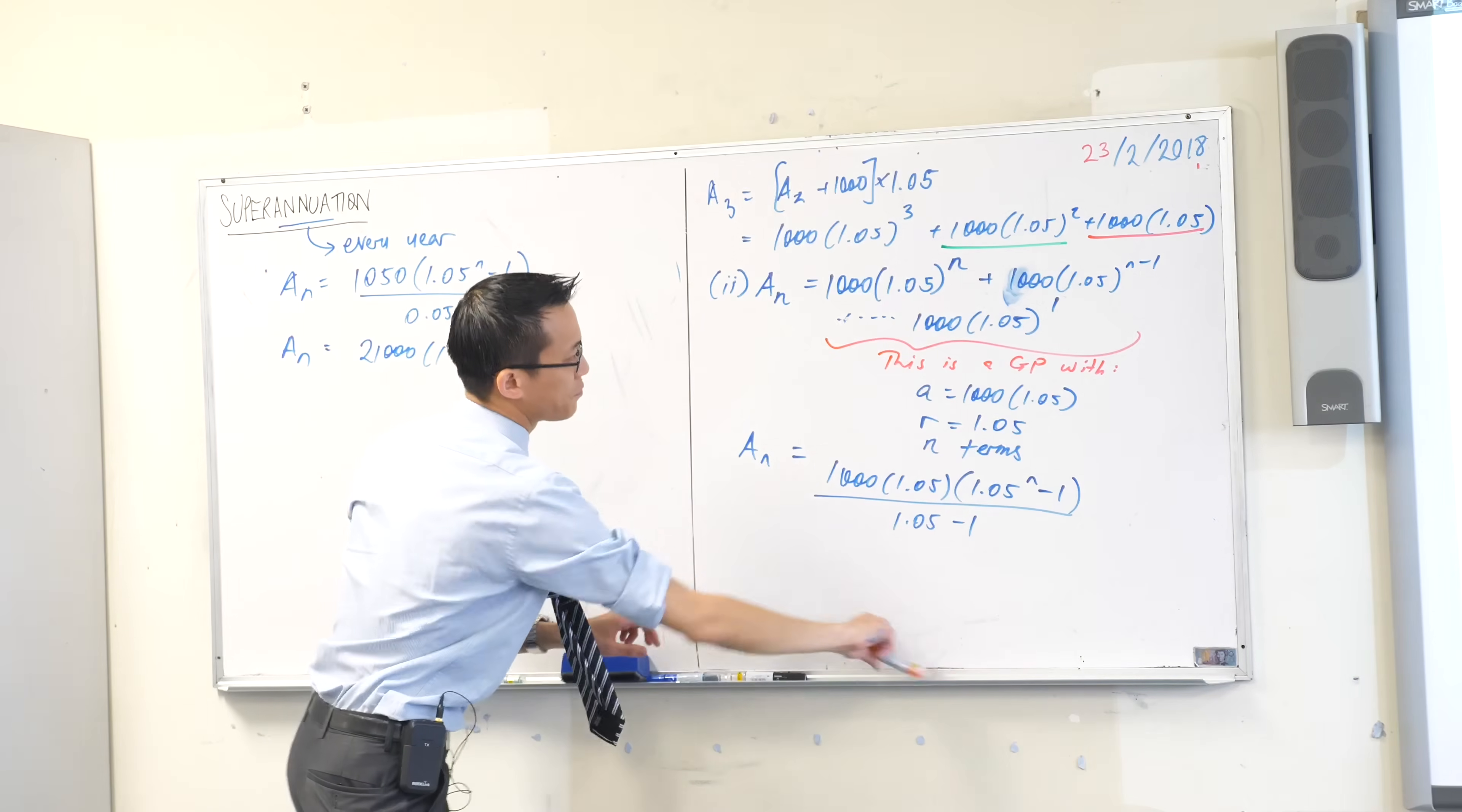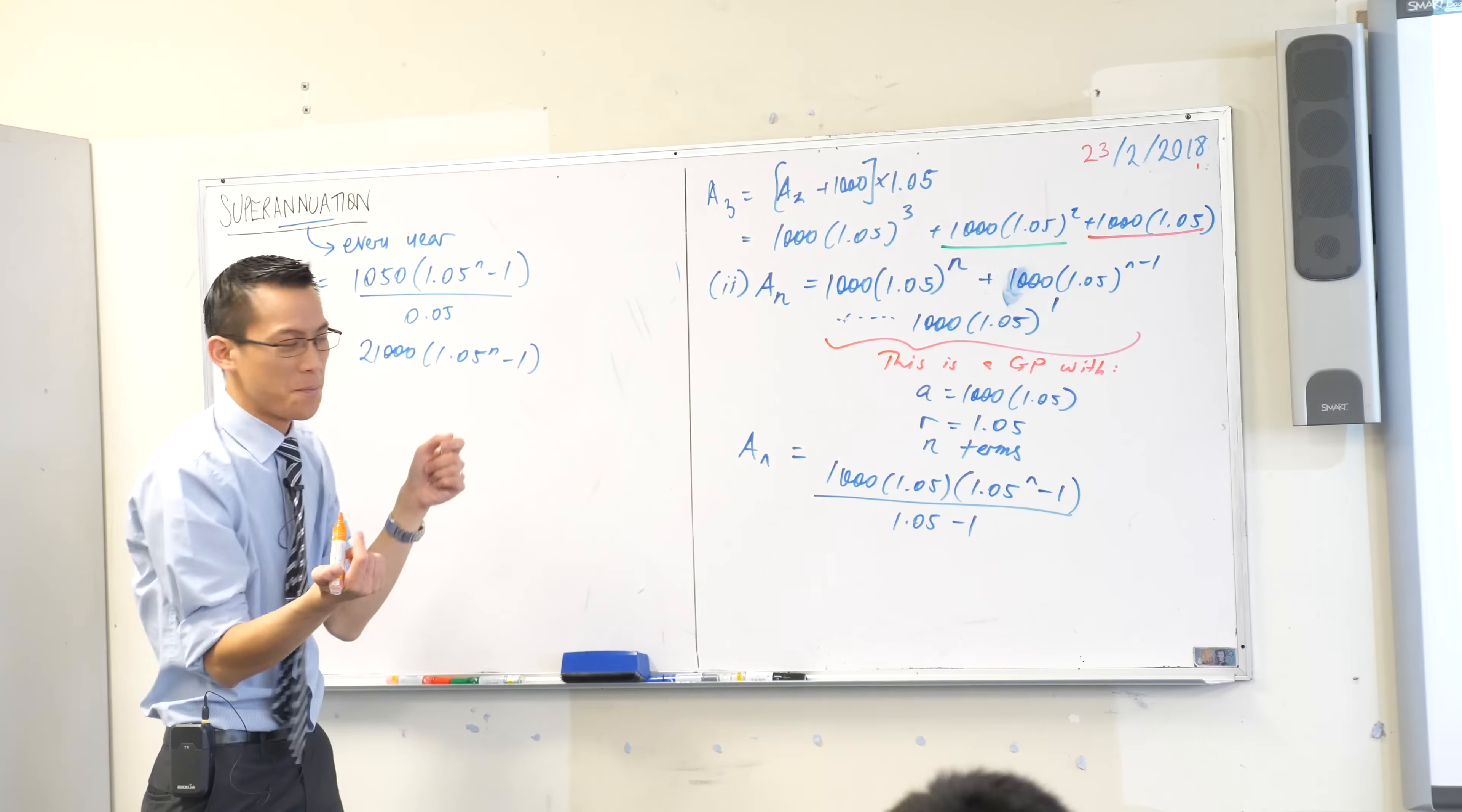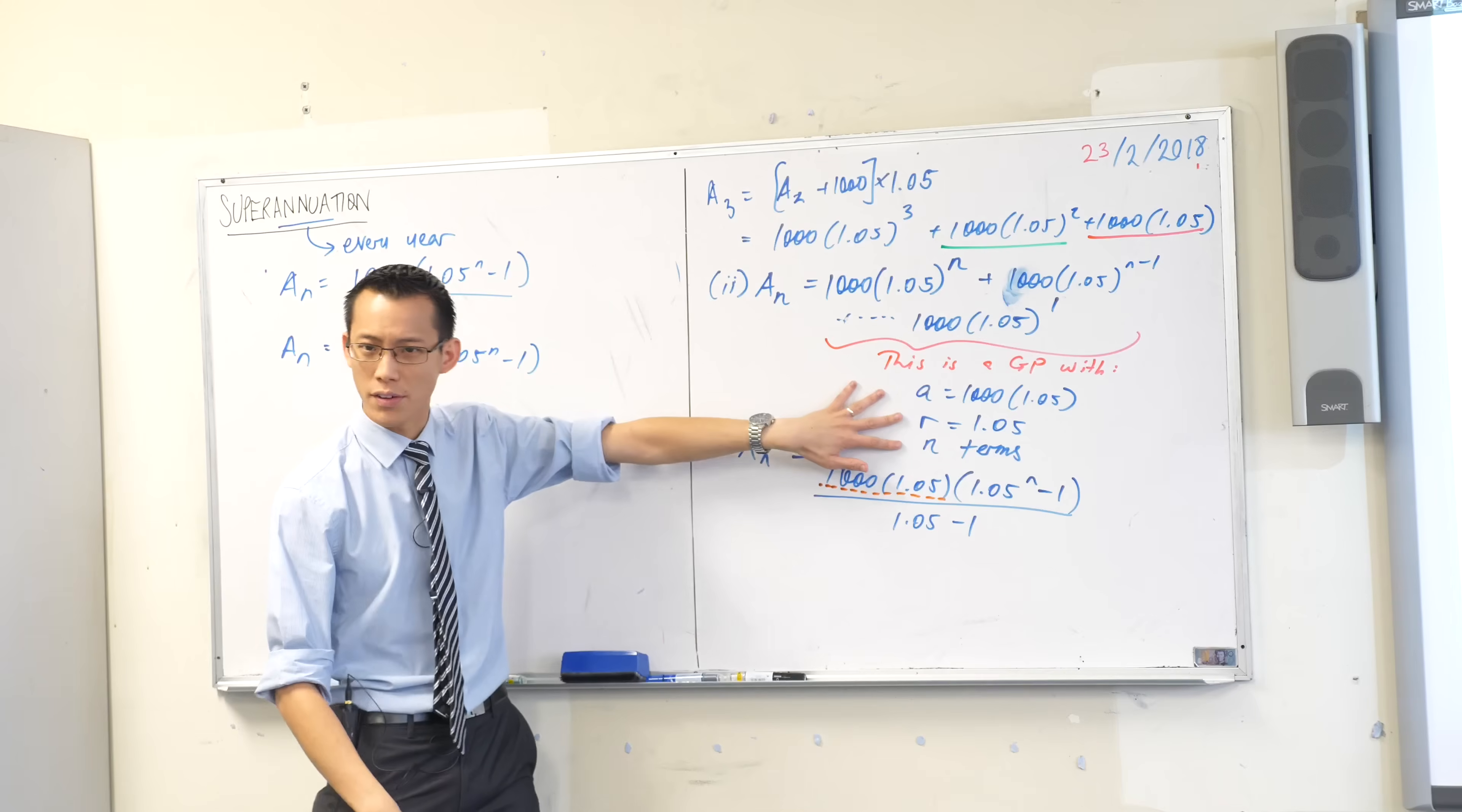Quick note before I move on. Remember I said to you at this point over here, I could have come up with a different GP by factoring out the 1,000 times 1.05. Can you see why I didn't? Because in the formula, it does that anyway, right? So you will come up with exactly the same sum of a GP as I have, even if we have different GPs identified.